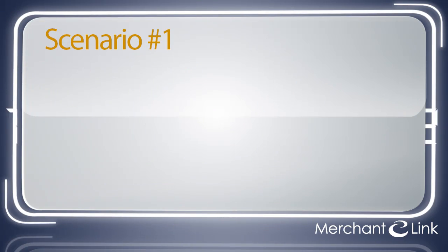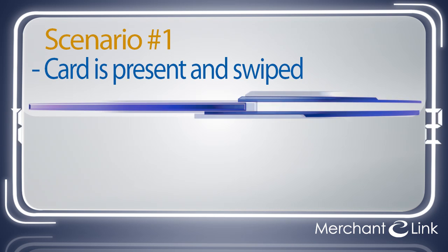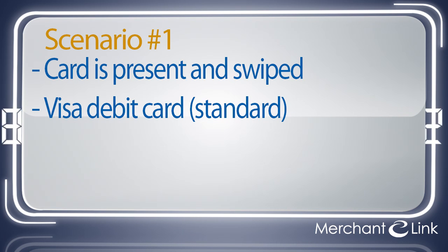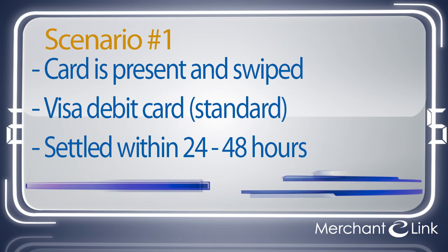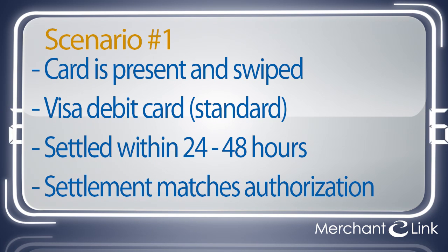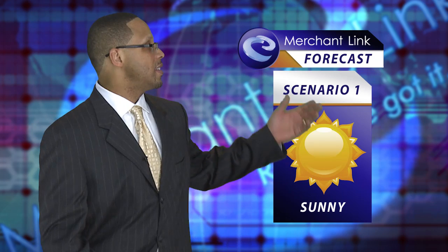Thanks, Beth. In our first example, the merchant processes a Visa card transaction with the following variables: the card is present, so the merchant swipes the card; the card presented is a standard non-rewards Visa debit card; and the merchant settles the transaction within 24 hours and the settlement amount matches the authorization amount. So, Emanuel, how does the weather look in this scenario? Considering the merchant obtained a card swipe, and there are fewer risks associated with debit card transactions, and the merchant followed the defined settlement rules, this transaction qualifies as a sunny transaction, and the merchant can expect to qualify for the best interchange rate possible.